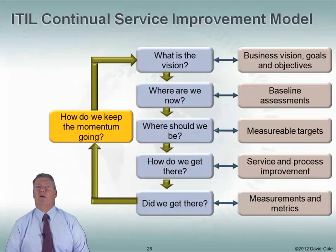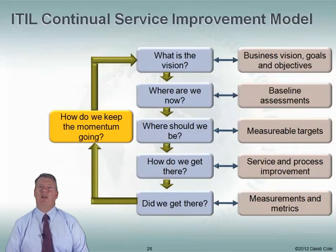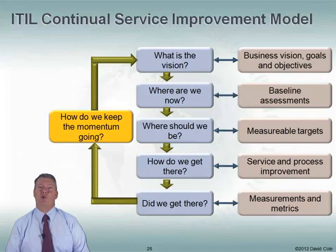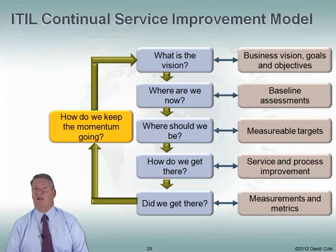The ITIL Continual Service Improvement Model works very well in the data center. It basically goes like this: What's our vision — where would we like our data center to go? Where are we now? Where should we be? How do we get there? And then, did we get there? And then we want to keep that momentum going. The vision is our business vision, goals, and objectives. Where are we now requires baseline assessments. Where should we be requires measurable targets — not just 'we want to be better,' but specific, measurable goals. Then we put processes and improvements in place. And did we get there? We do more measurements and metrics to see if we met our measurable targets.